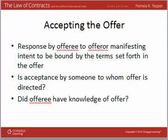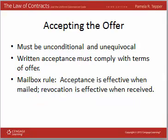That brings us to the end of our analysis of the offer. Once a valid offer has been made, we look at acceptance. Acceptance is the response by the offeree to the offeror of an intent to be bound by the terms of the offer. Acceptance must be made by someone to whom the offer is directed. For example, if you offer to sell your friend your cell phone for fifty dollars, a bystander cannot jump in and accept — the offer was made to your friend only.